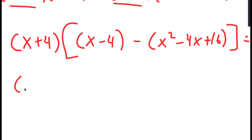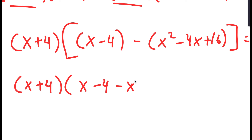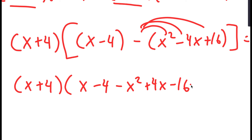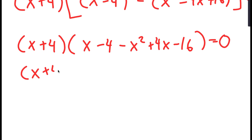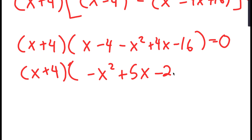So I get x plus 4 times x minus 4 minus x squared plus 4x minus 16, distributing the negative sign, which simplifies to x plus 4 times negative x squared plus 5x minus 20, equals 0.